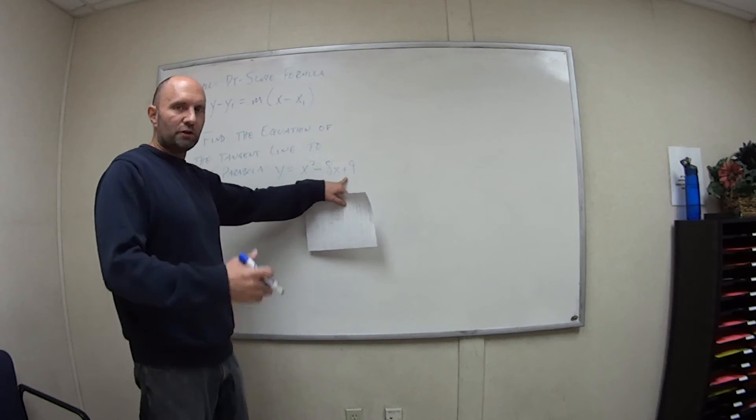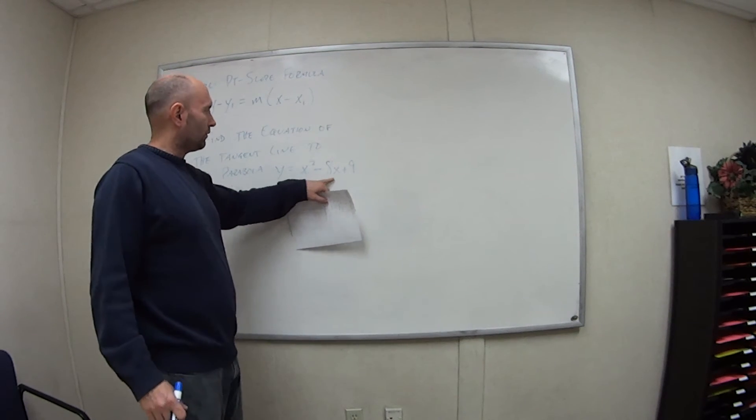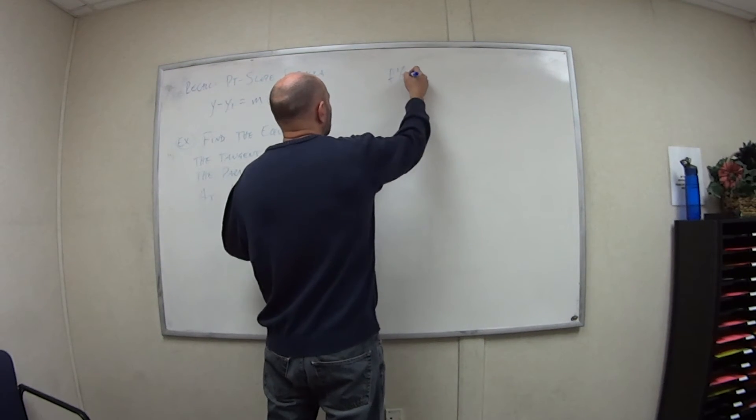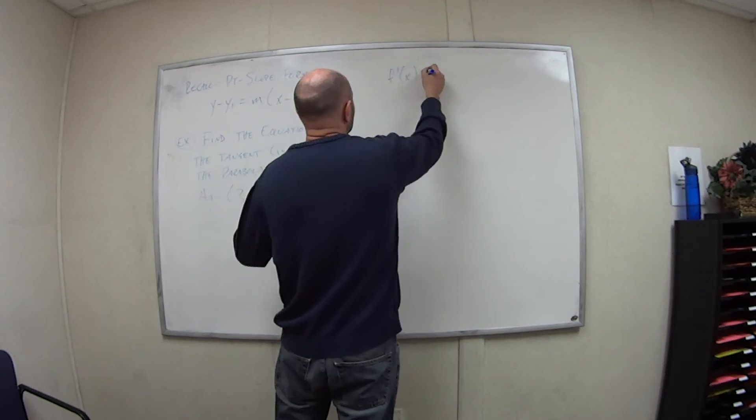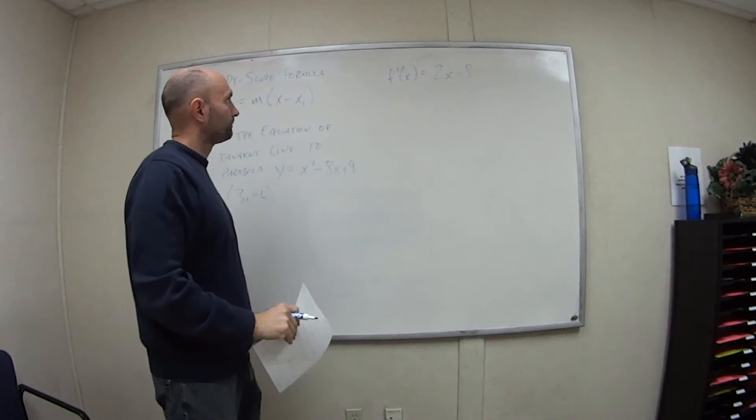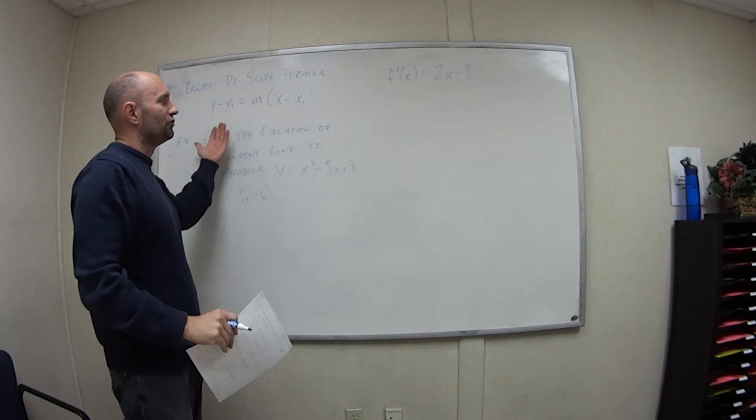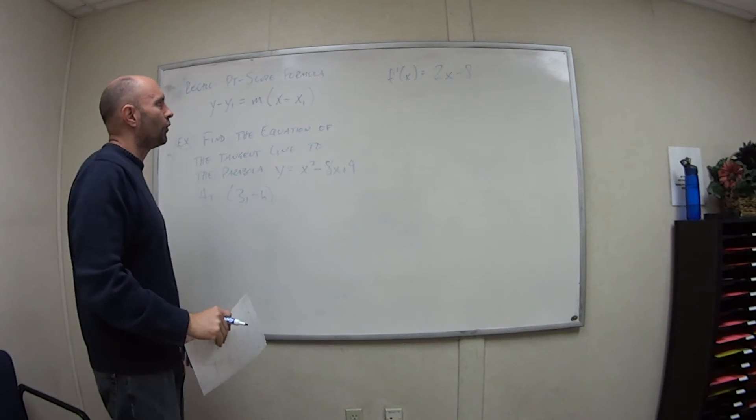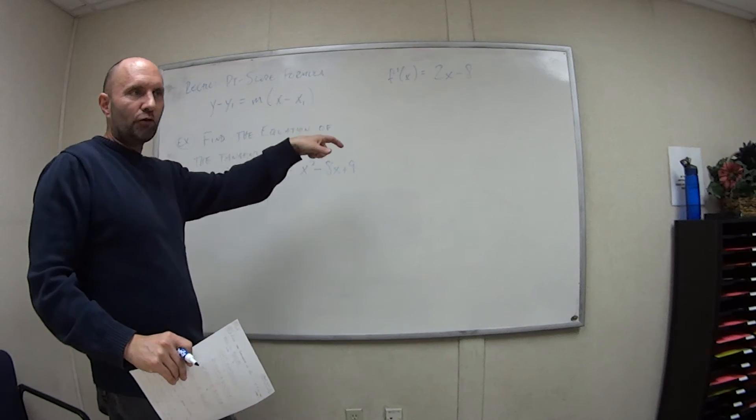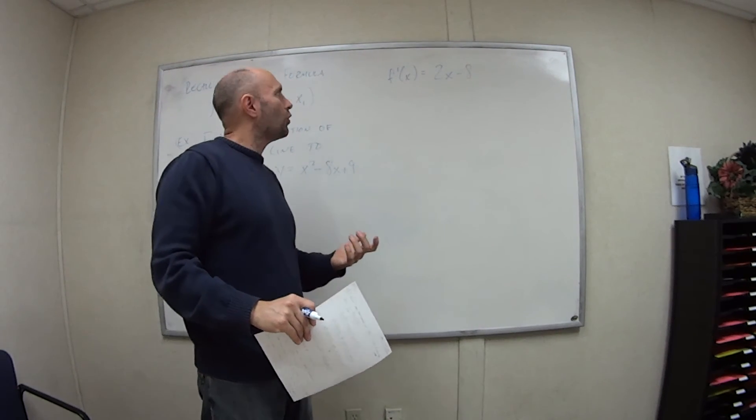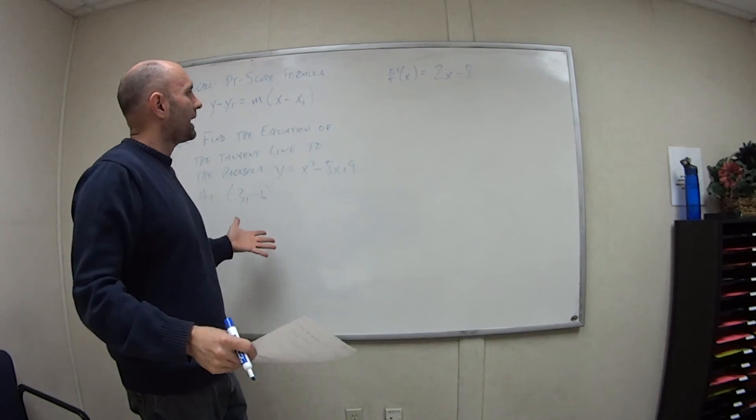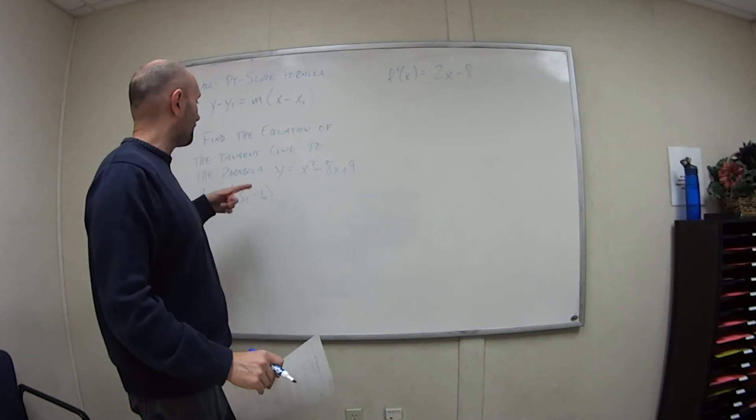So first thing we need is slope, then use the point slope formula. So this equation is the one that we were just working with, the one we used the long method and the short method. And that said f prime of x is equal to 2x minus 8. Again, that's the example we just did, so I'm not going to go through the whole process to get it again. That's our f prime, that's our derivative. What's our derivative? Our derivative is the slope of the line. And then it's just a matter of where we're at on the graph or on the curve.